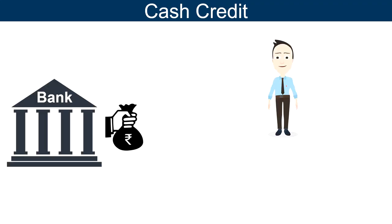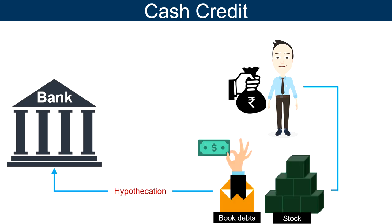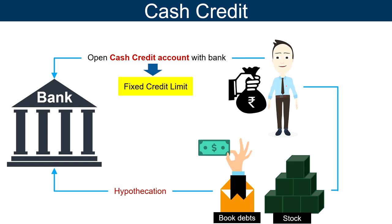Cash Credit is a facility in which banks provide short term or medium term cash loans to its customers against some tangible securities like stock, book debts or personal guarantee. For this purpose the customer is required to open a cash credit account with the concerned bank, on which a fixed credit limit is provided. This limit is based on a certain percentage of the value of securities pledged.